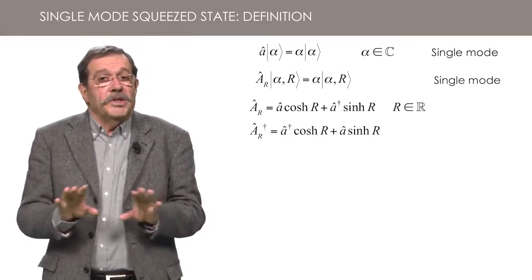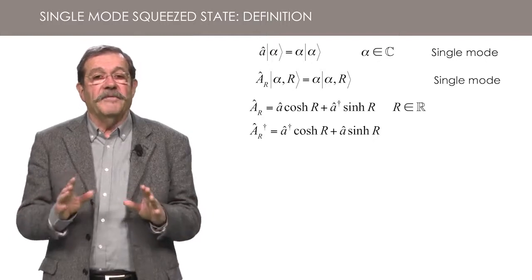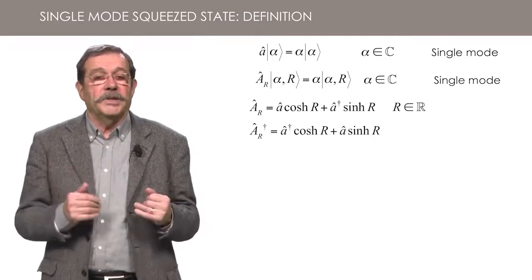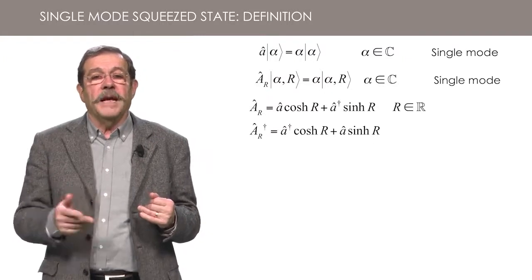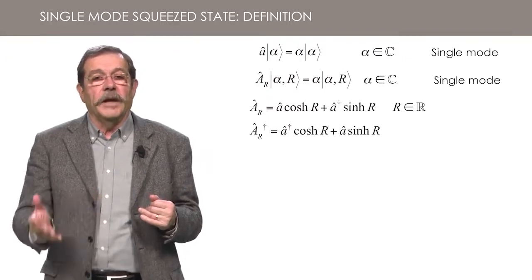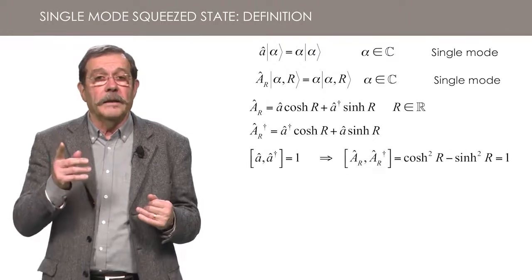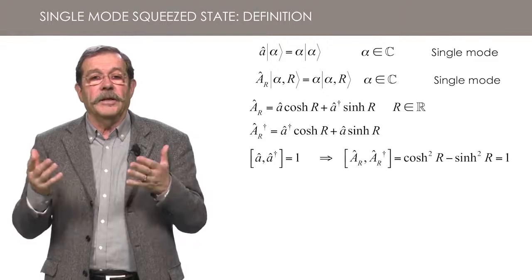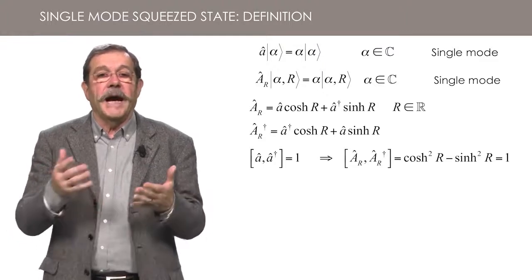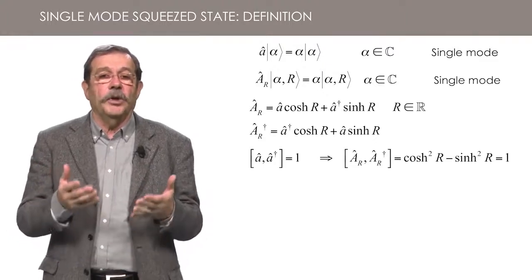So you should not be surprised that its eigenvalues are complex numbers. It is also remarkable that the commutator of AR and A dagger R is equal to 1.